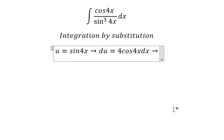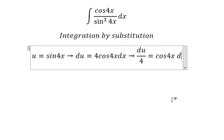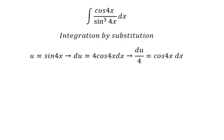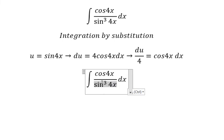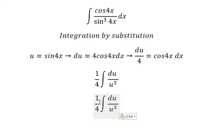This one we change by u, and we have u to the power of 3. Cos 4x dx we change by du over number 4. The integration of this one we will have u to the power of negative 3 plus 1 over negative 3 plus 1.